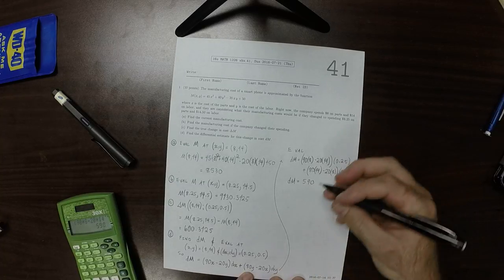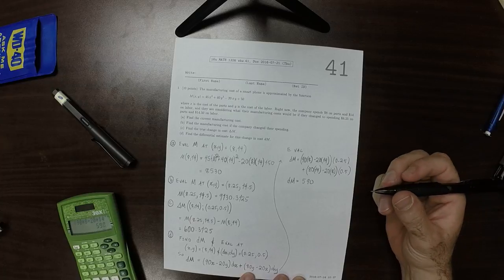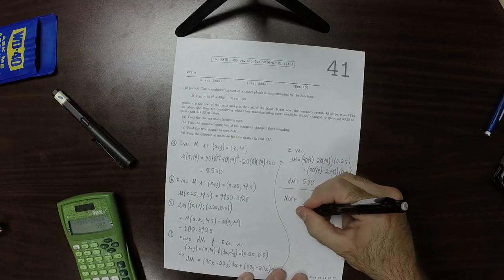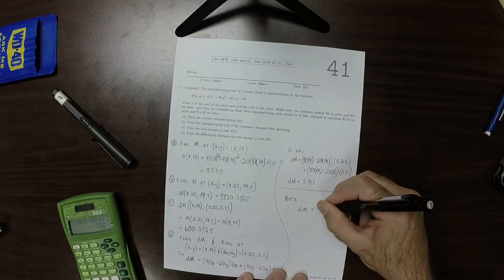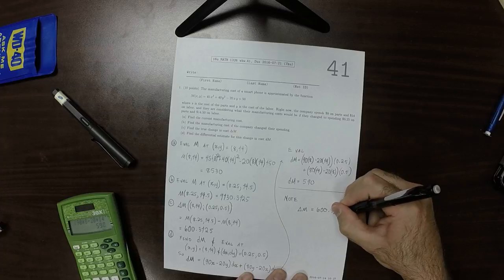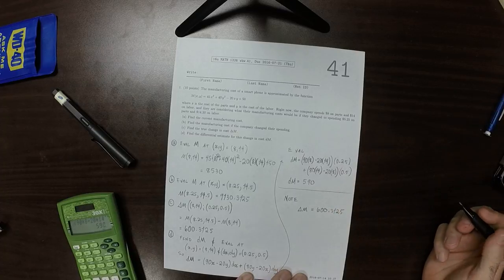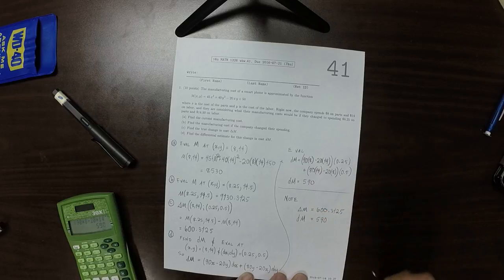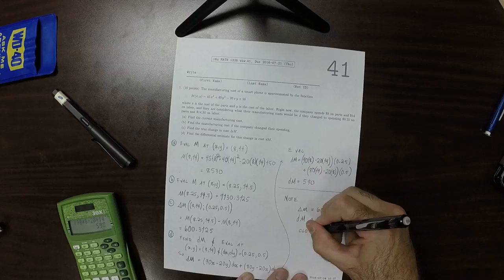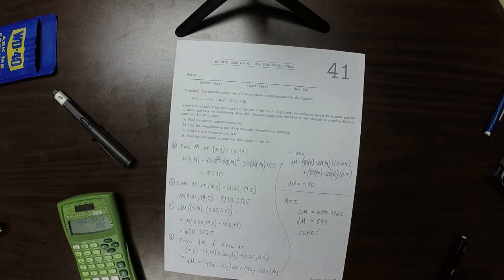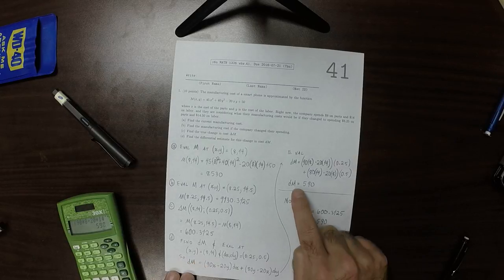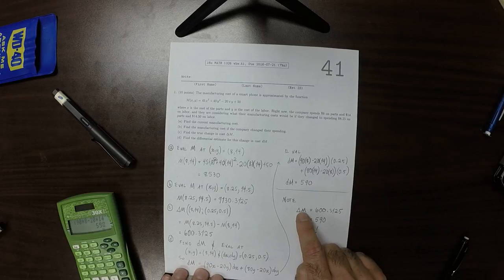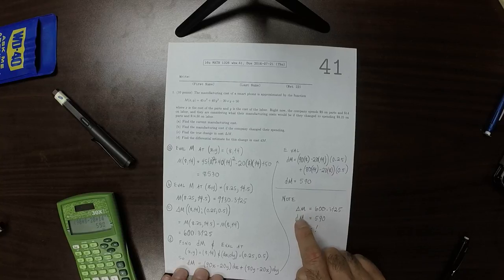So that's the answer to the question. But what I want you to note is that we computed the true change is 600.3125, and the differential estimate for the change, DM, is 590. And that's pretty close. And that's the point of this technique, is that the differential estimate allows you to estimate the true change. And sometimes that's far easier to do the differential estimate than to compute the true change.